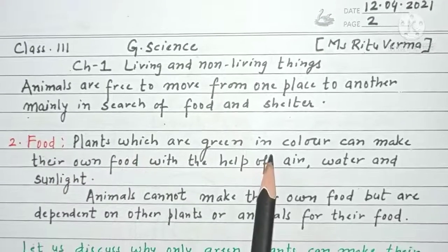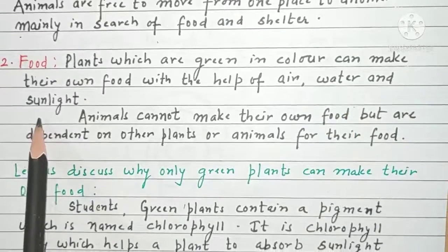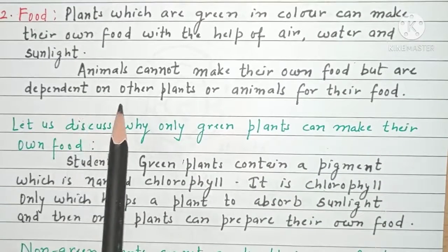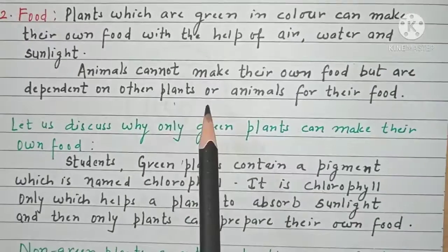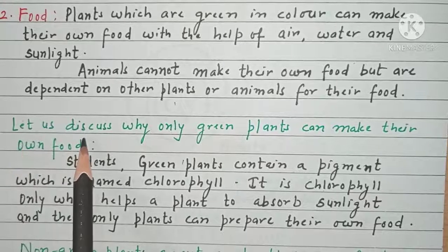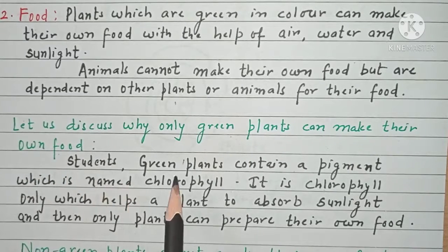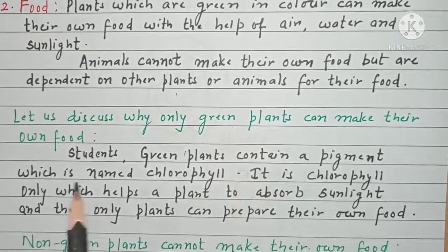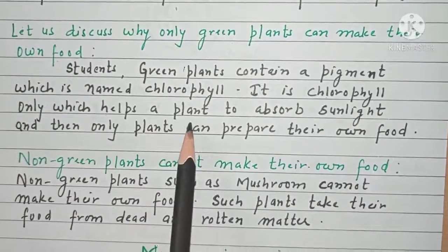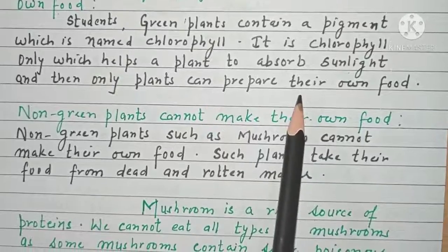The next criteria is food. Students, plants which are green in colour can make their own food with the help of air, water and sunlight. Animals cannot make their own food, but are dependent on other plants or animals for their food. Let us discuss why only green plants can make their own food. Green plants contain a pigment named chlorophyll. It is chlorophyll only which helps a plant to absorb sunlight, and then only plants can prepare their own food.